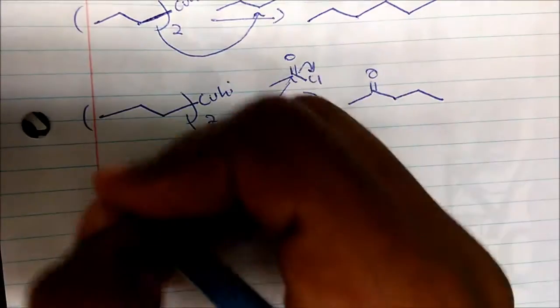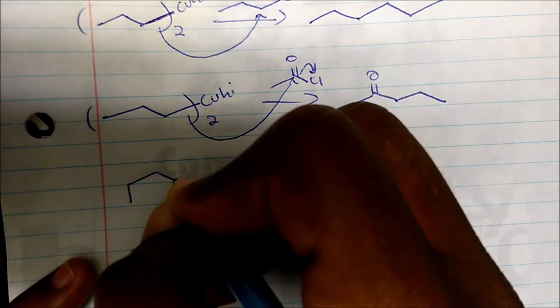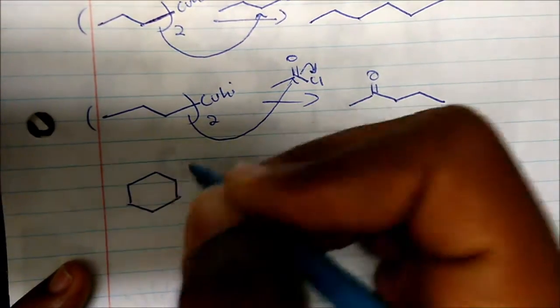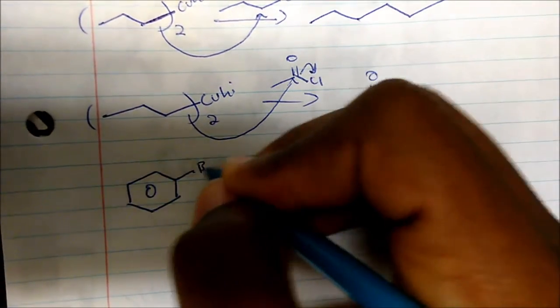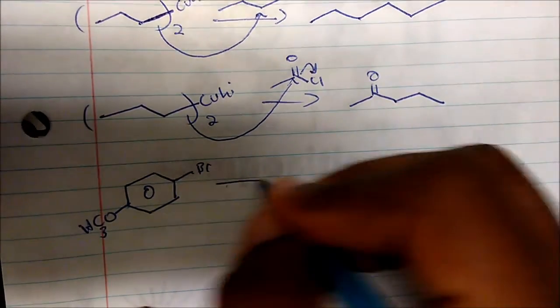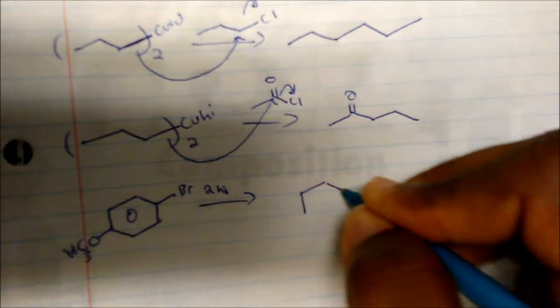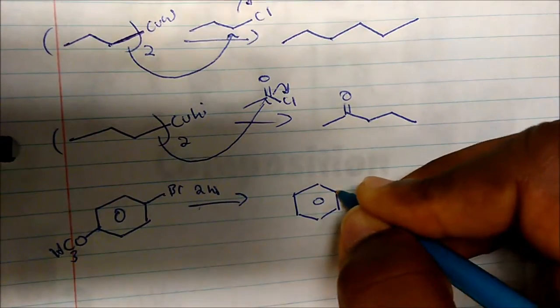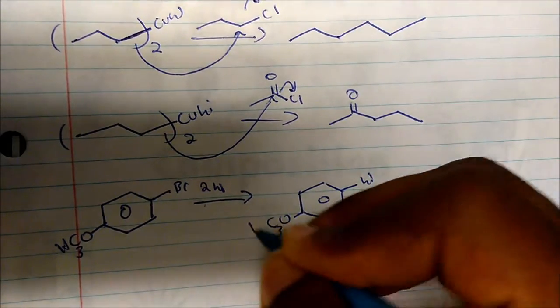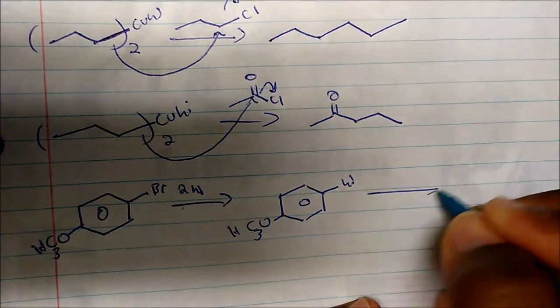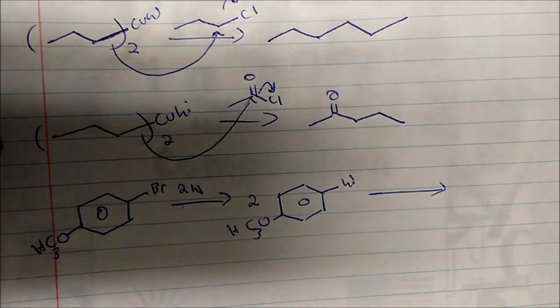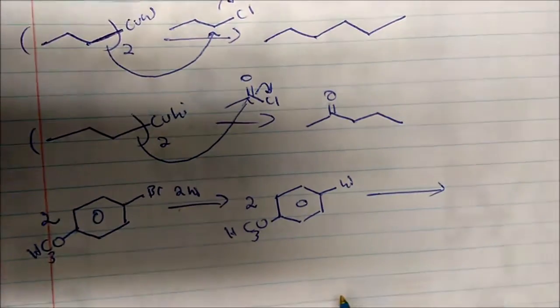Let's look at another example and create the Gilman reagent for a different starting material. We take this compound and treat it with two moles of lithium, which displaces the bromine, giving us two moles of the corresponding alkyl lithium. We then treat this with copper cyanide to create our Gilman reagent.